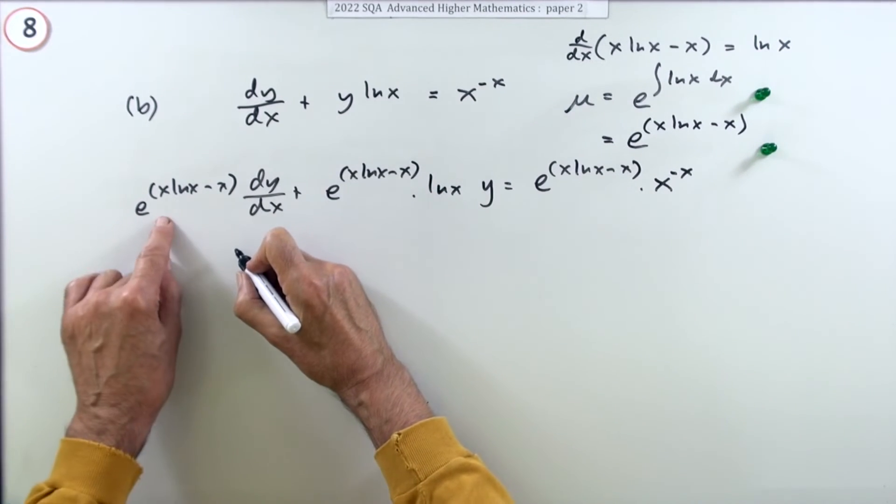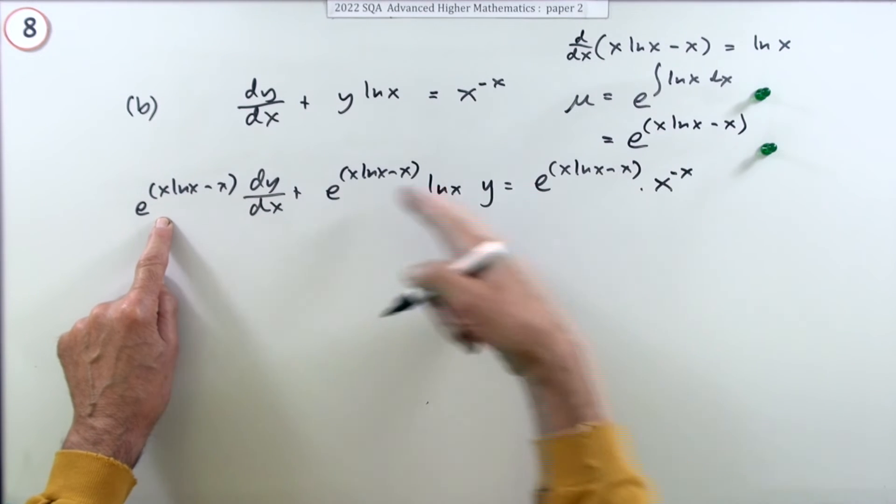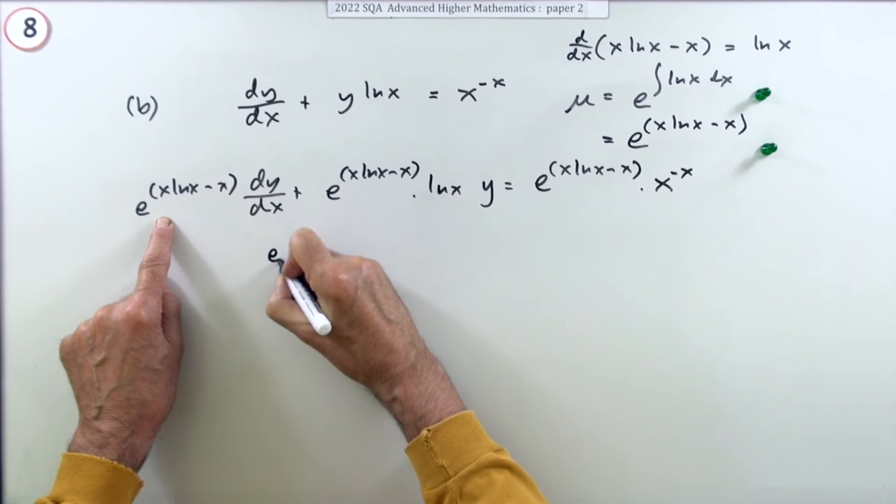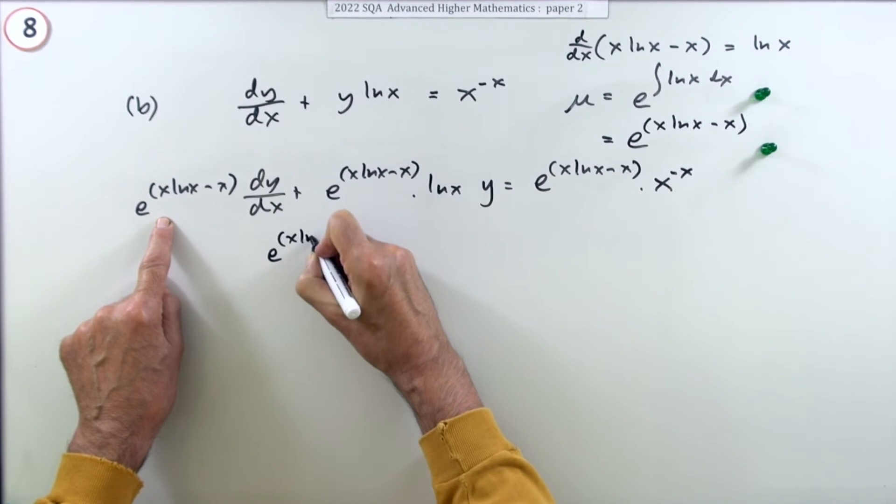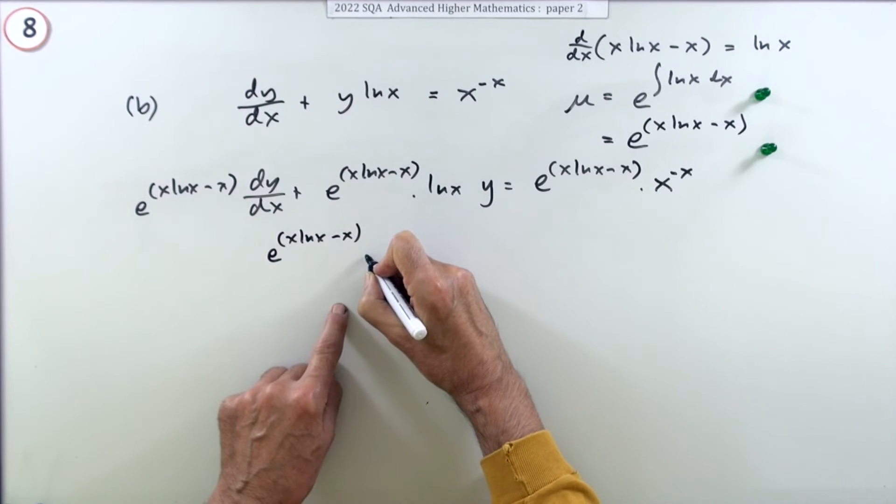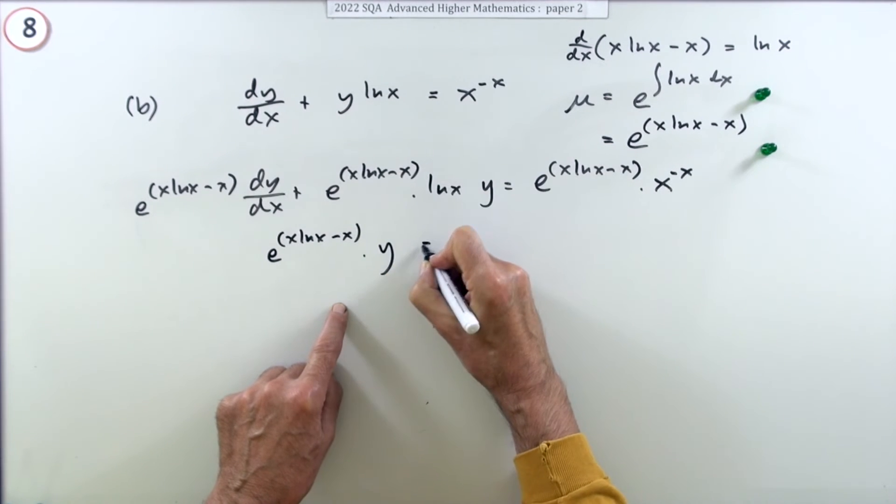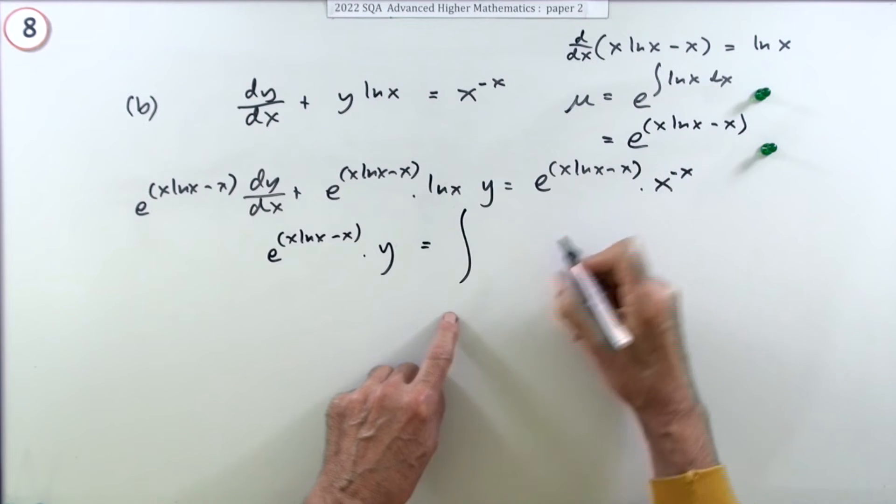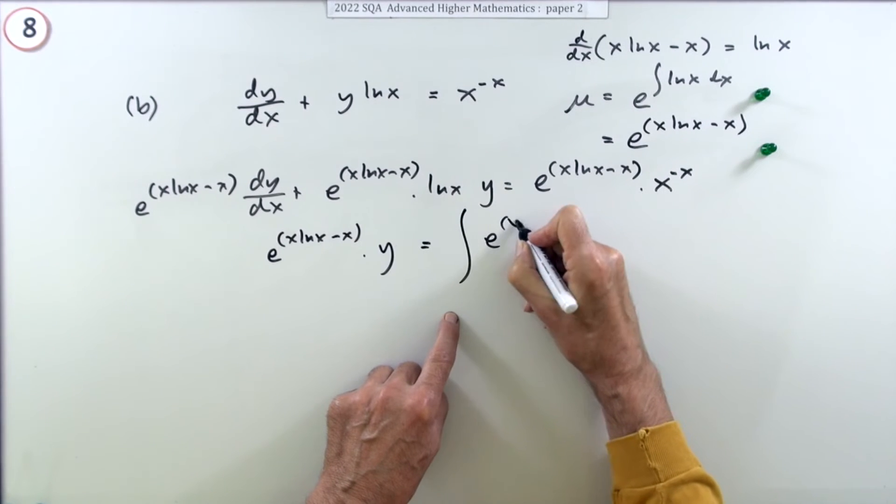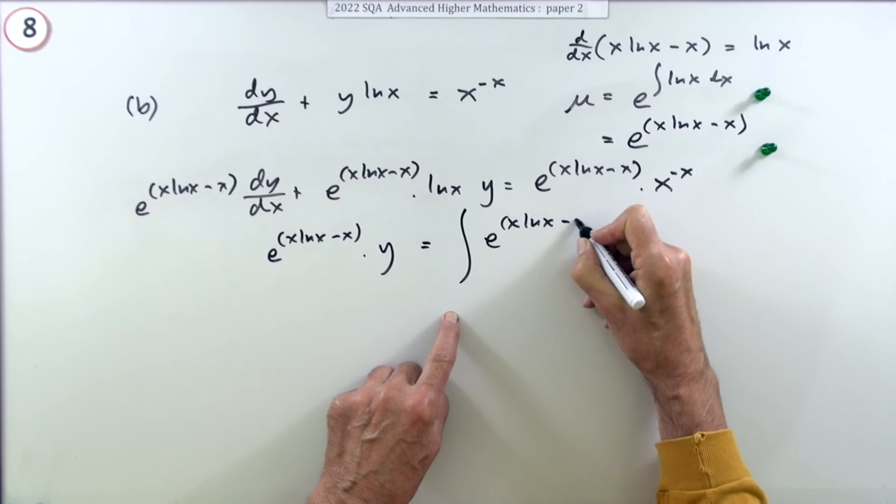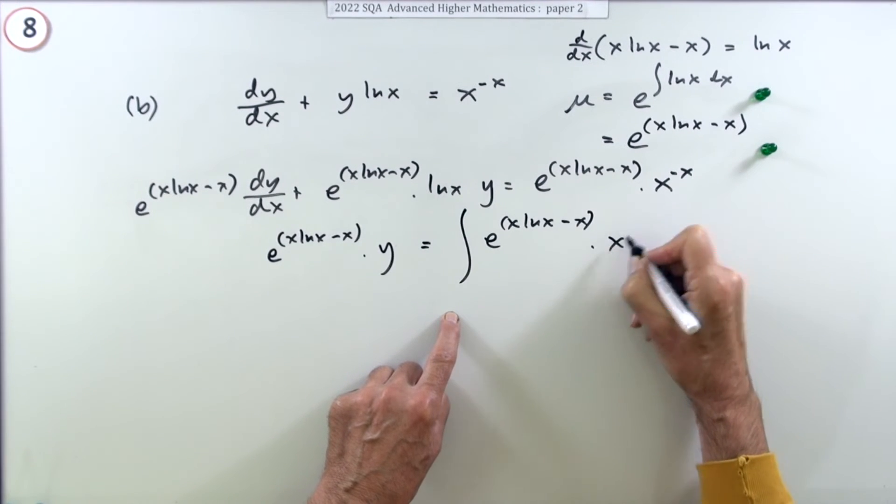So that's just the pattern for this times that. If you were to integrate this, the next line would be e^(x*ln(x) - x) times y equals, and integrating this side, e^(x*ln(x) - x) * x^(-x) dx.